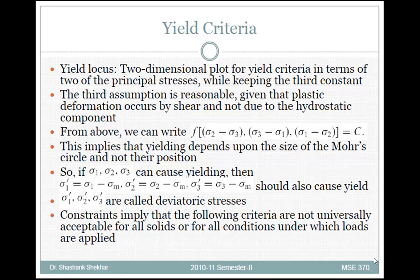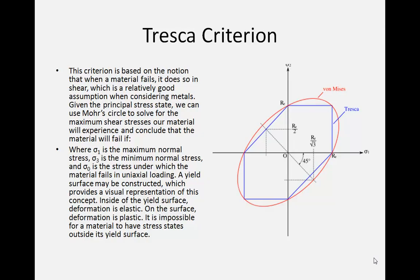σ₁', σ₂', and σ₃' are called the deviatoric stresses. Since yield strength is a function of the differences of the principal stresses, yielding depends upon the size of the Mohr circles, not their position.